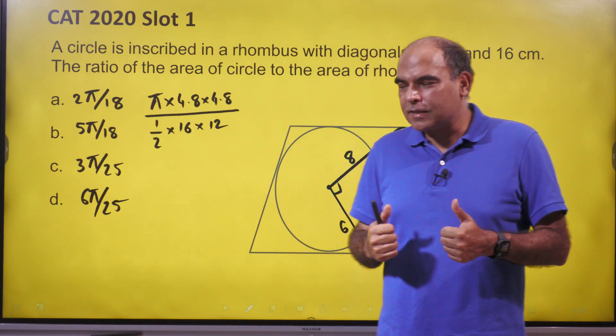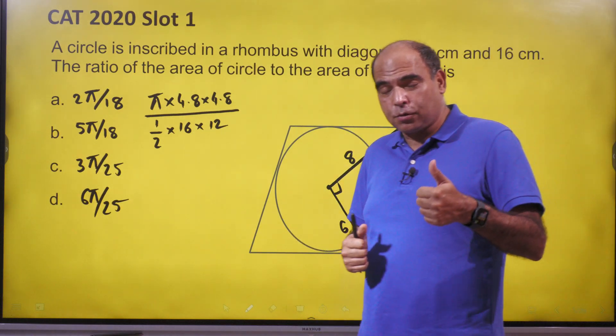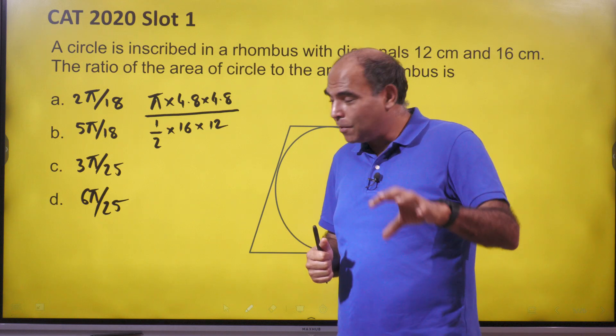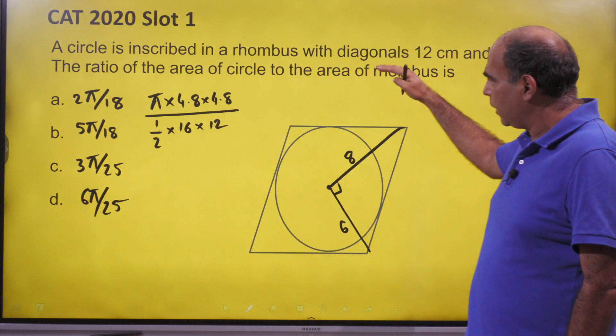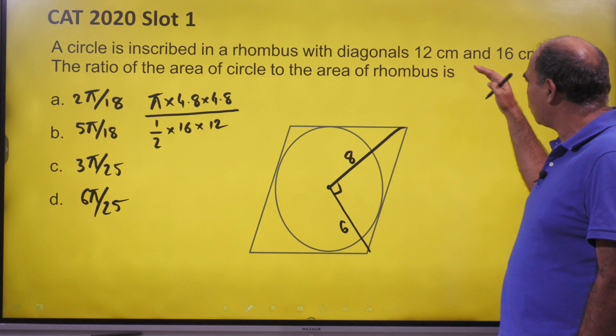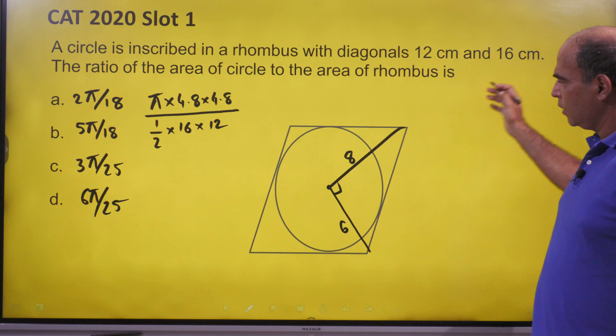Hi everyone, welcome back to the 60-second series. In this question from CAT 2020 Slot 1, we have a simplified solution for a geometry question. A circle is inscribed in a rhombus with diagonals 12 cm and 16 cm.